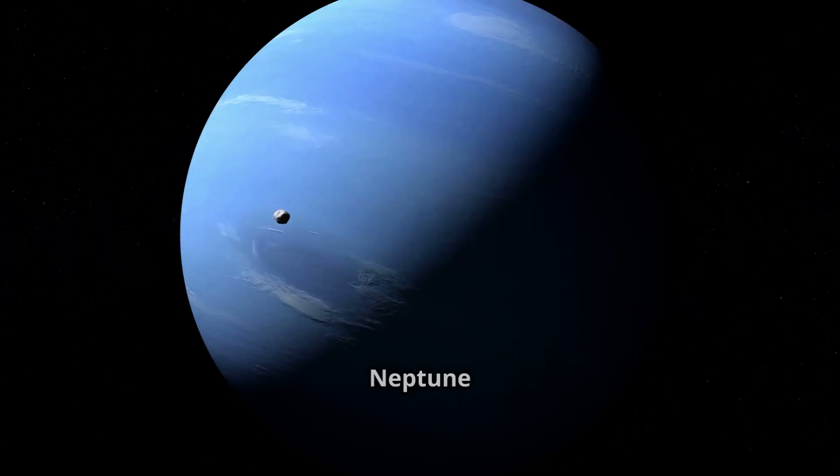The windiest planet! Neptune has crazy storms and is the farthest planet from the sun. It's super dark and cold out there.